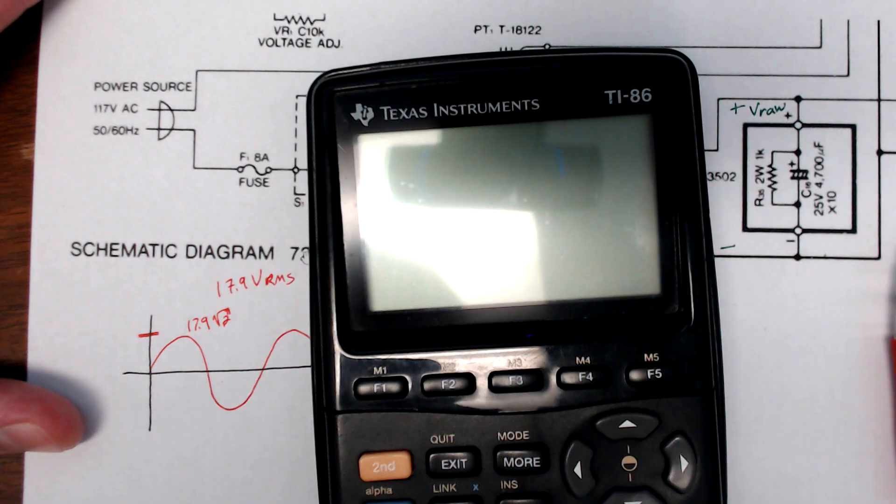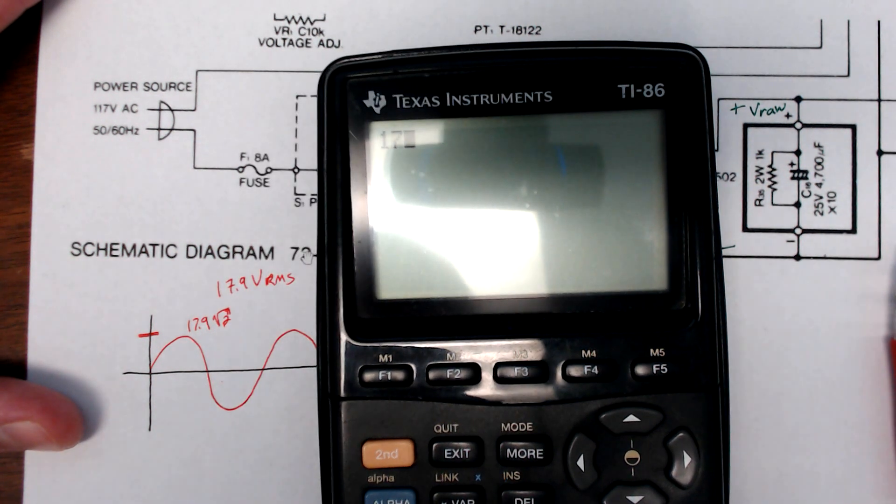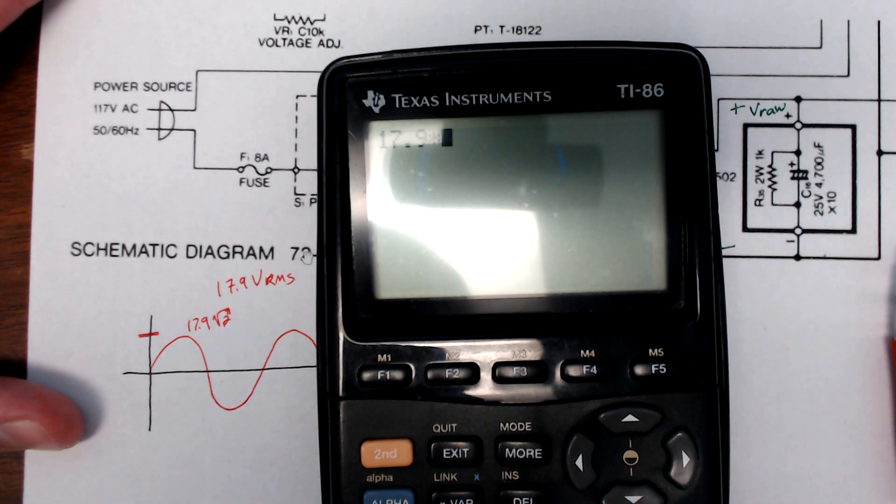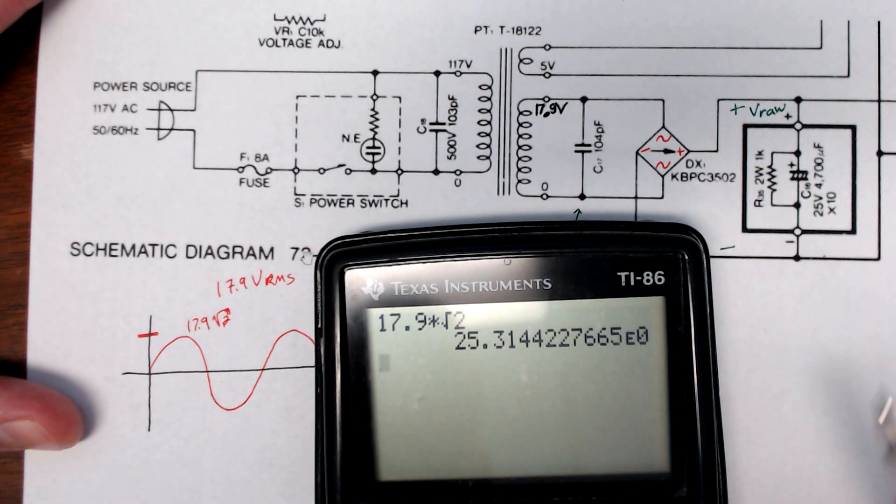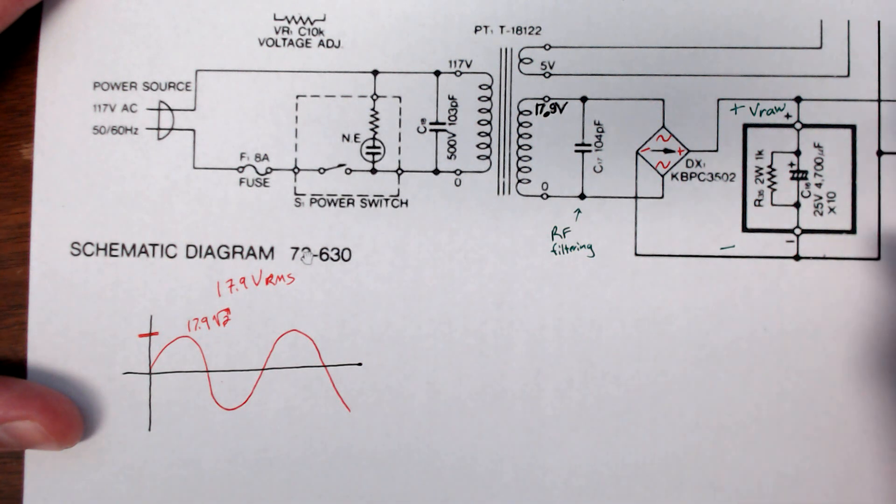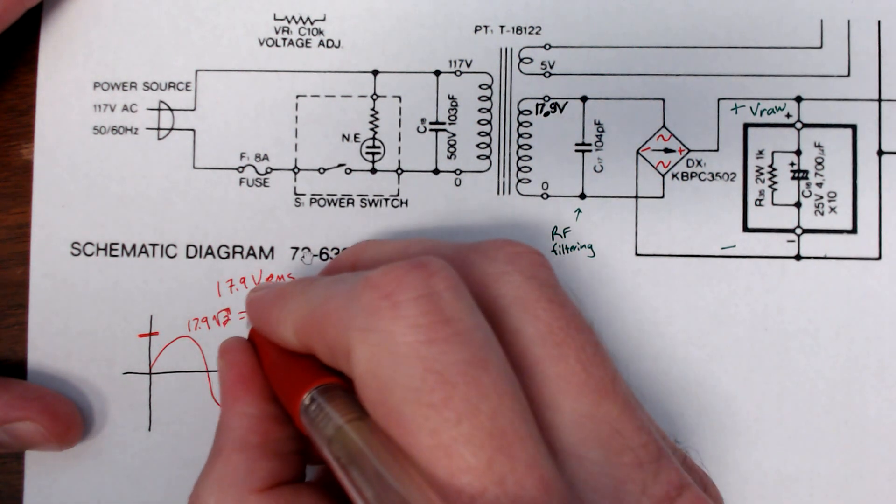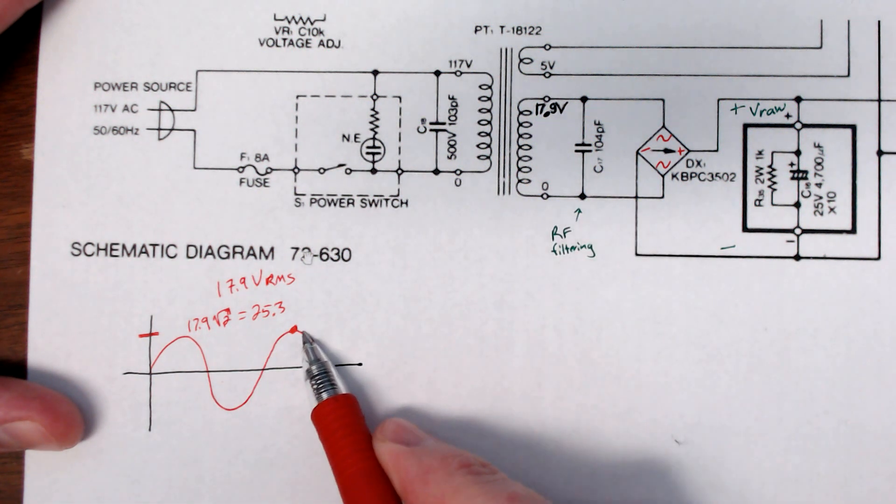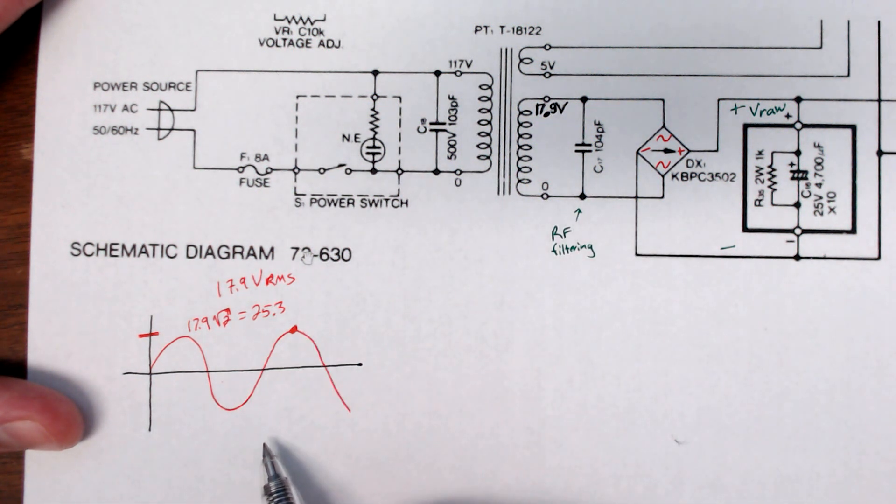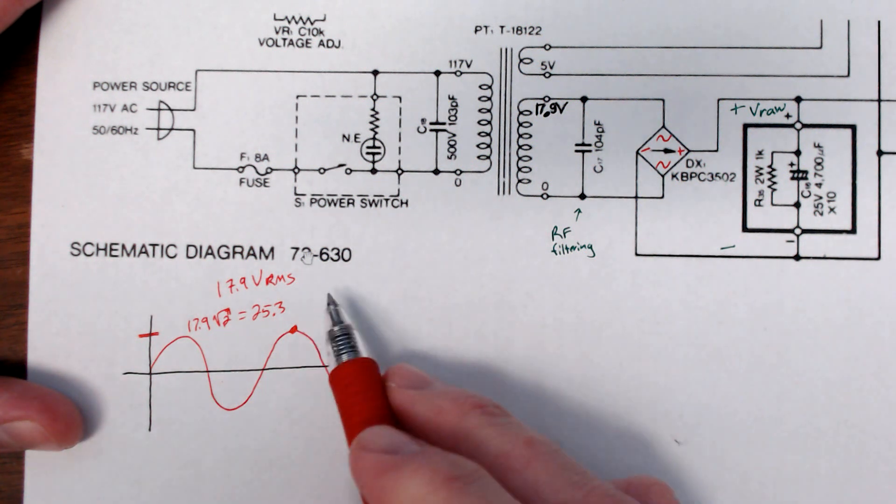I'm just going to compute this. So 17.9 times square root of 2. We get 25.3 volts. And that's the peak value. Peak up here. It goes up to 25.3, it goes down to 25.3.